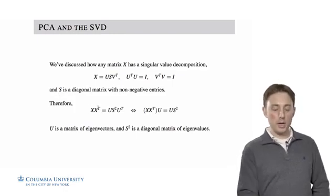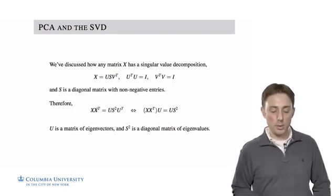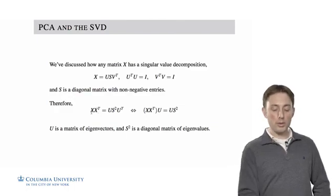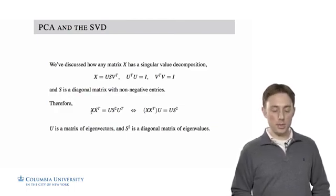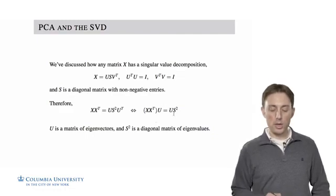Therefore, this matrix that we get, X times X transpose, which is what we want to learn the eigen decomposition of, is equal to U S squared U transpose. Similarly, we have this product, X X transpose U is equal to U S squared.